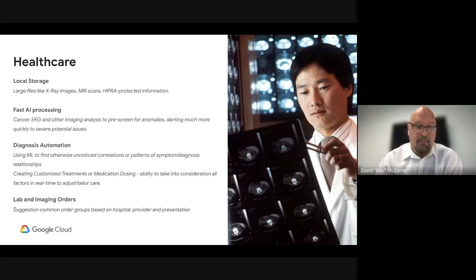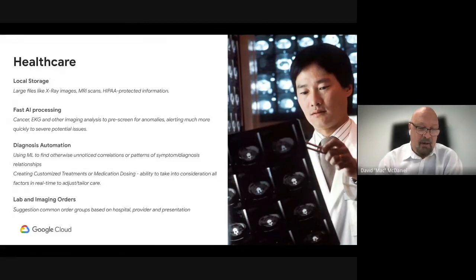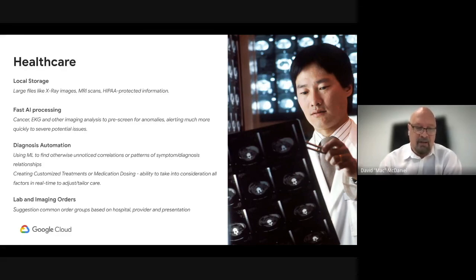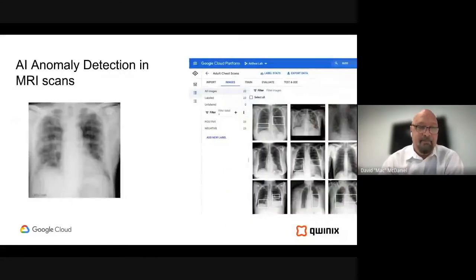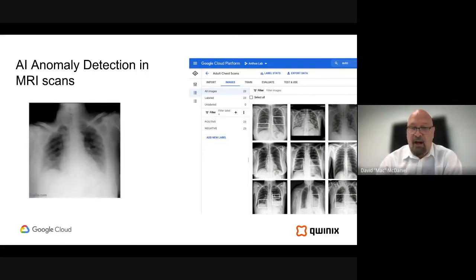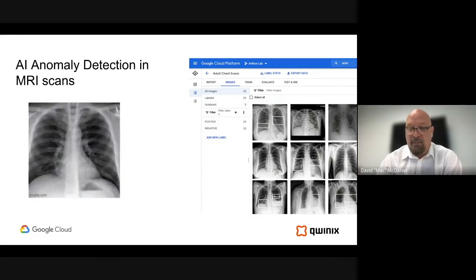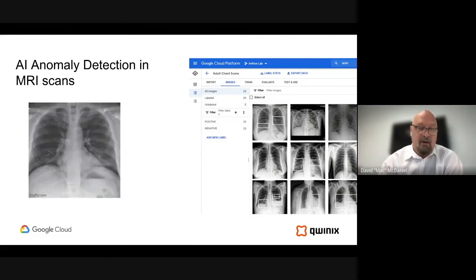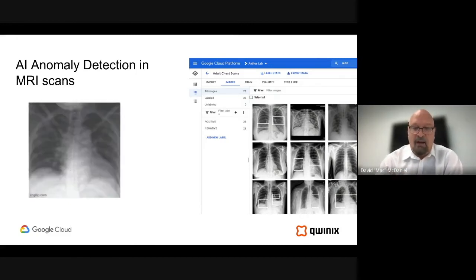You can also use ML to find otherwise unnoticed correlations or patterns of symptoms and diagnosed relationships. Many times multiple professionals are involved in treating a patient, and this gives them the ability to look at all that data in a single pane and make correlations automatically and much more quickly. Another popular trend is building customized treatments or medication dosing specific to the patient — many medications vary in dosing depending on weight, for example. Finally, suggesting common order groups based on the hospital provider and presentation of symptoms from the patient helps automate ordering based on hospital size and provider type, freeing up providers to deal with patients more than computers. An example: training data on identifying issues with lung scans, then processing patient images through the ML engine at the edge in the hospital, quickly identifying potential problems.